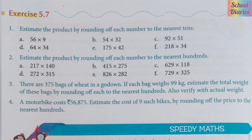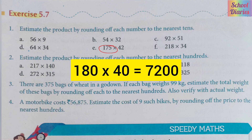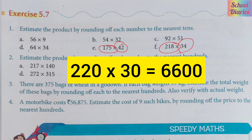Let's see two examples here. We will round off 18 to 20 and 34 will be 30. So here we will multiply 20 by 30 and you will find the answer.